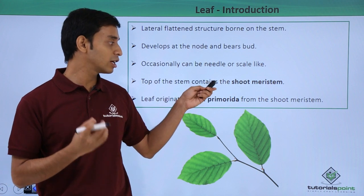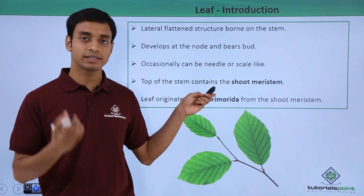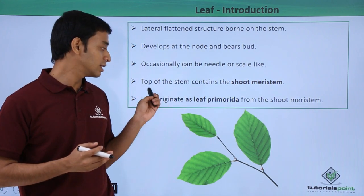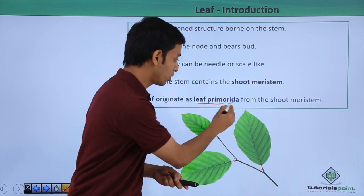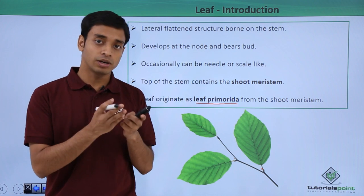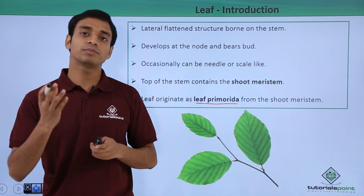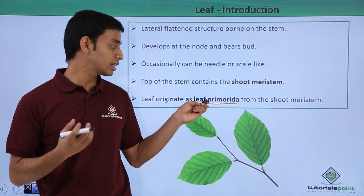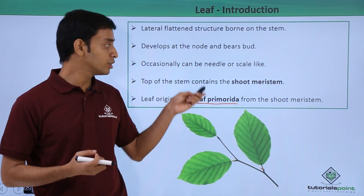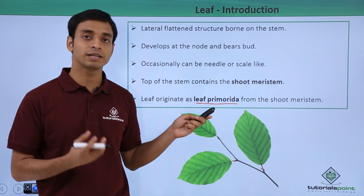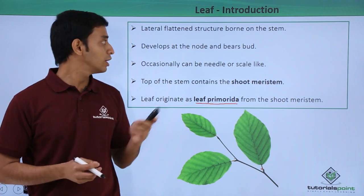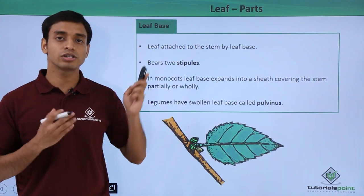At the top or the apex of the stem, there are very actively dividing meristematic cells, known as the shoot meristems. From the shoot meristems, the leaf originates as leaf primordia. Leaf primordia is the initial or primary structure of the leaf — the preliminary structures which arise before the formation of a proper leaf, from the actively dividing areas of the stem.